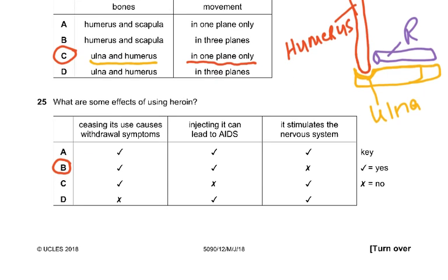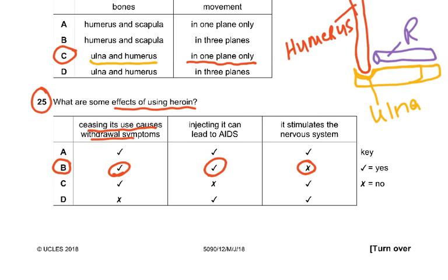Coming on to question 25: what are some effects of using heroin? Ceasing its use causes withdrawal symptoms — yes, that's correct. Injecting it can lead to AIDS because if you share needles, that's going to lead to AIDS. The statement that it stimulates the nervous system is wrong — it is the opposite of that. So the two correct points are: stopping causes withdrawal symptoms, and sharing needles can cause AIDS.